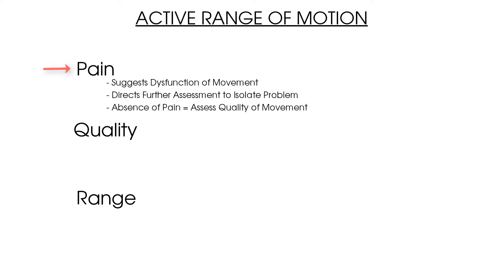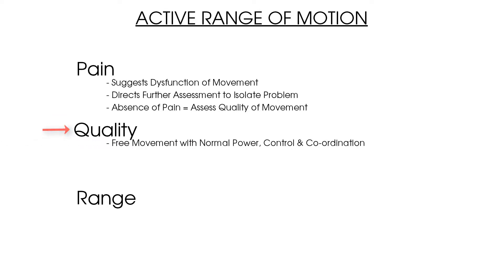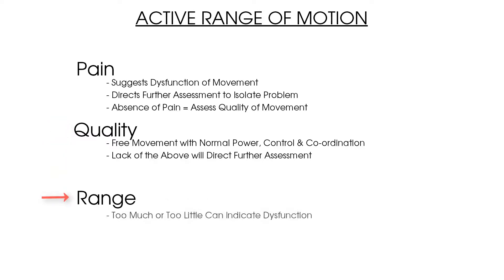In terms of quality, good quality indicates that the brain and local tissue are both happy and able to perform the movement. It means the patient will look very willing to move and have sufficient power with good control and coordination. If these are lacking, quality can be questioned, likely directing further testing — for example, weakness due to a myotomal weakness from a spinal pathology or a deconditioned muscle from the local area.